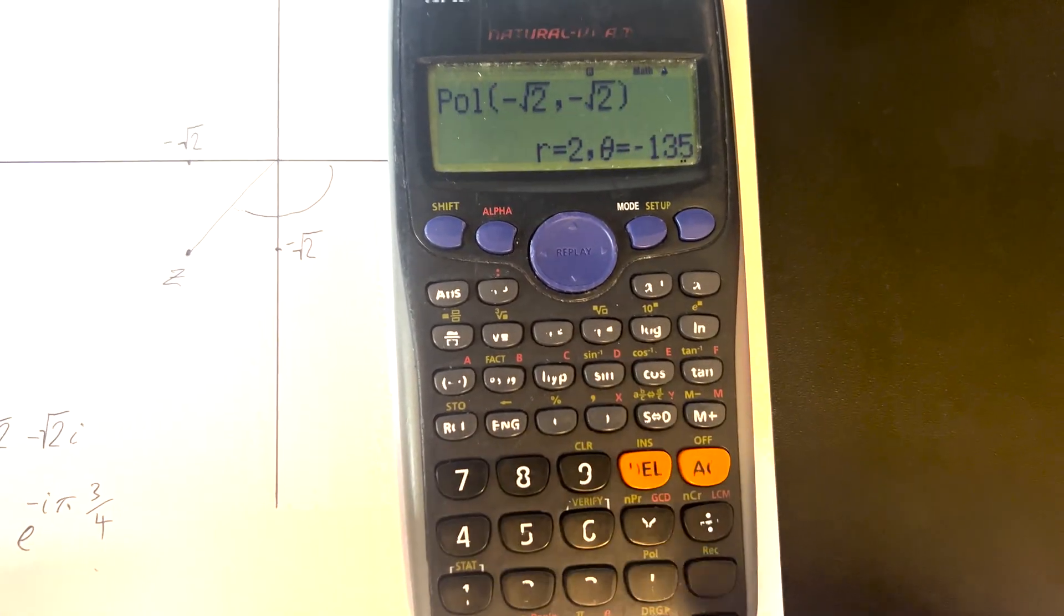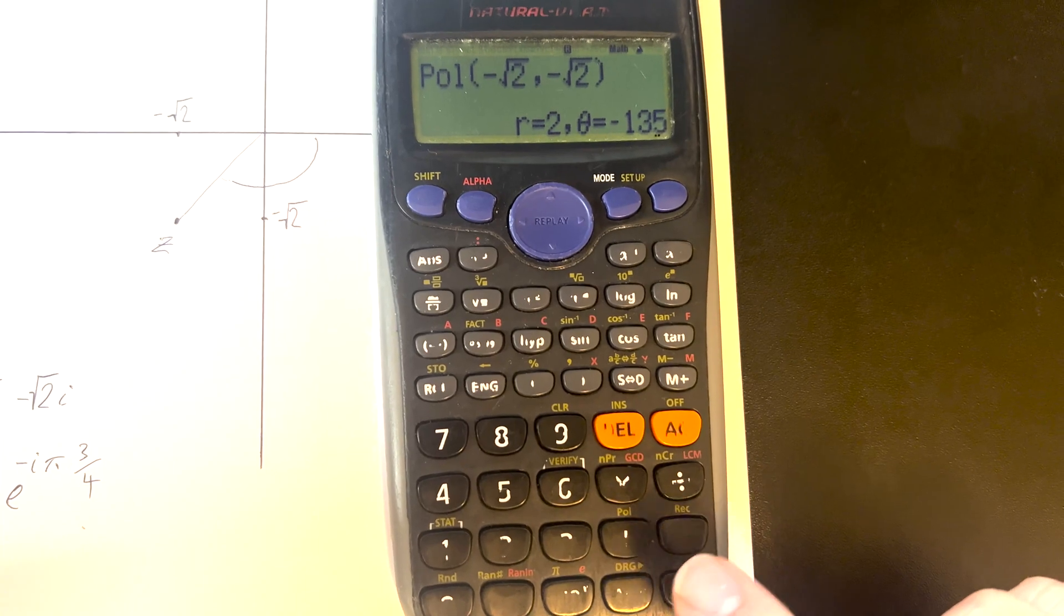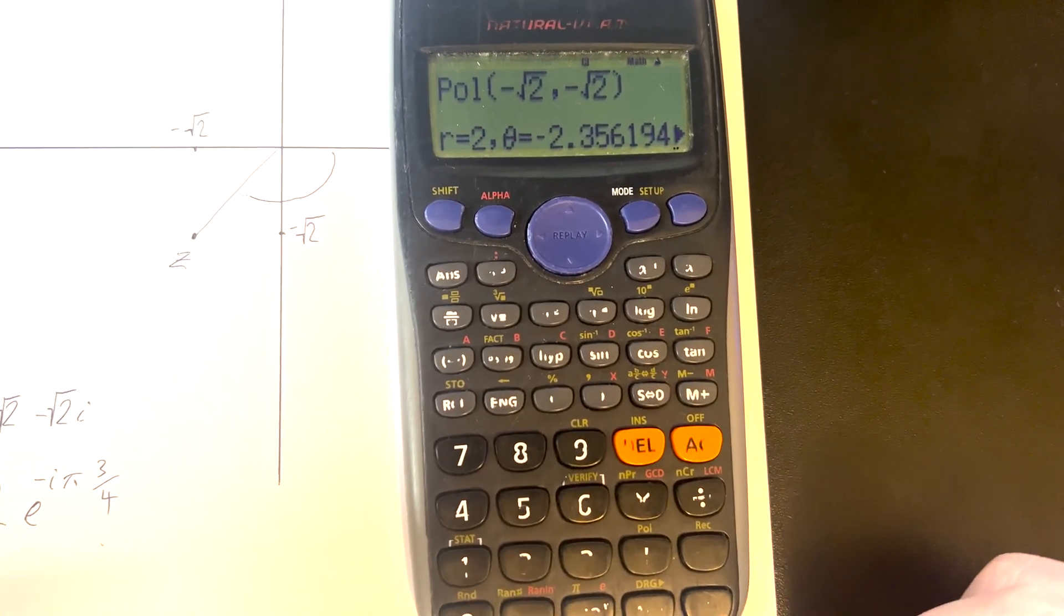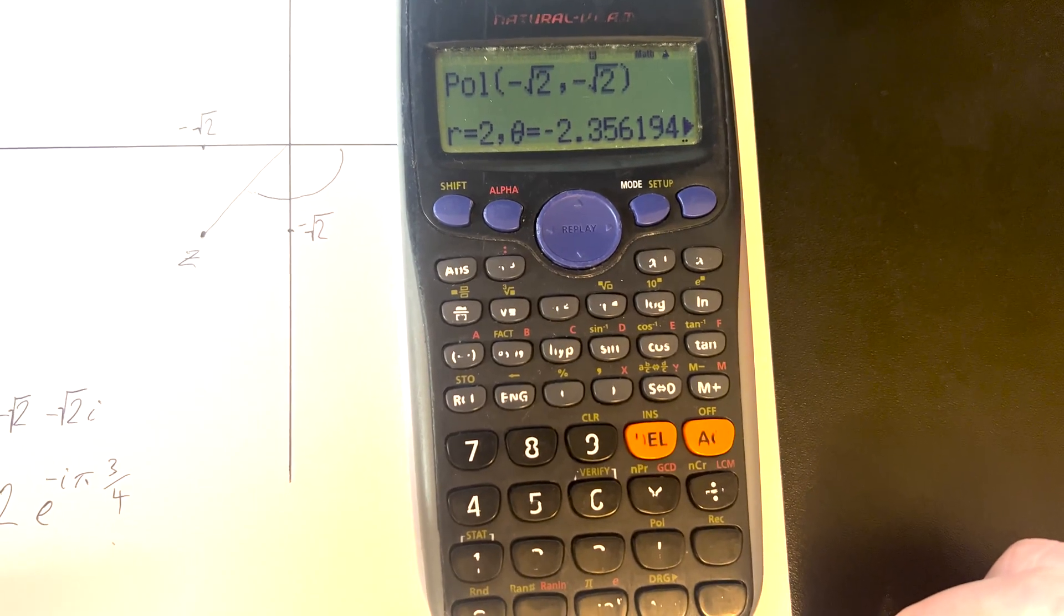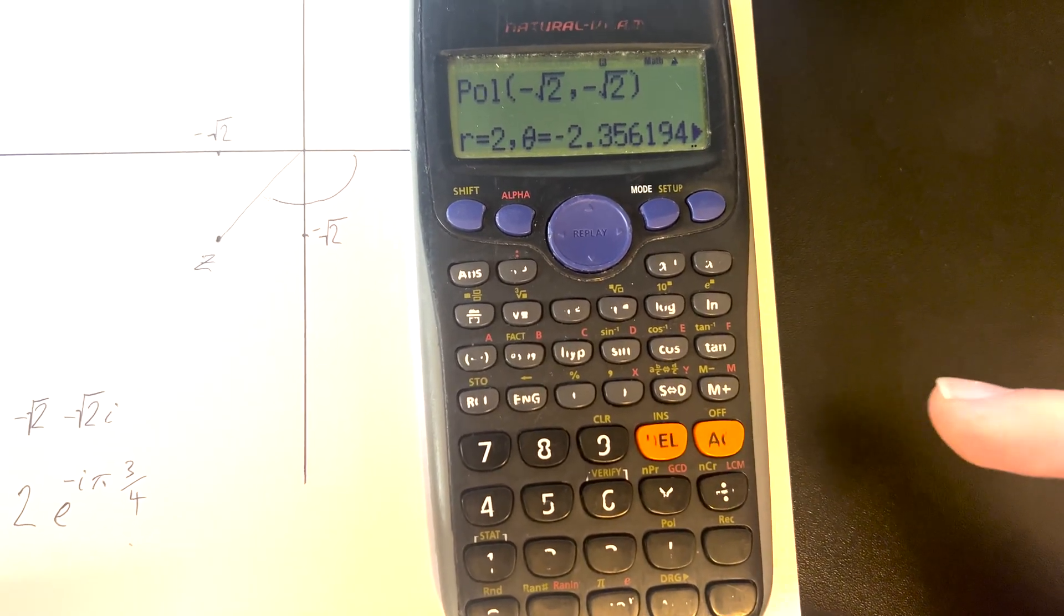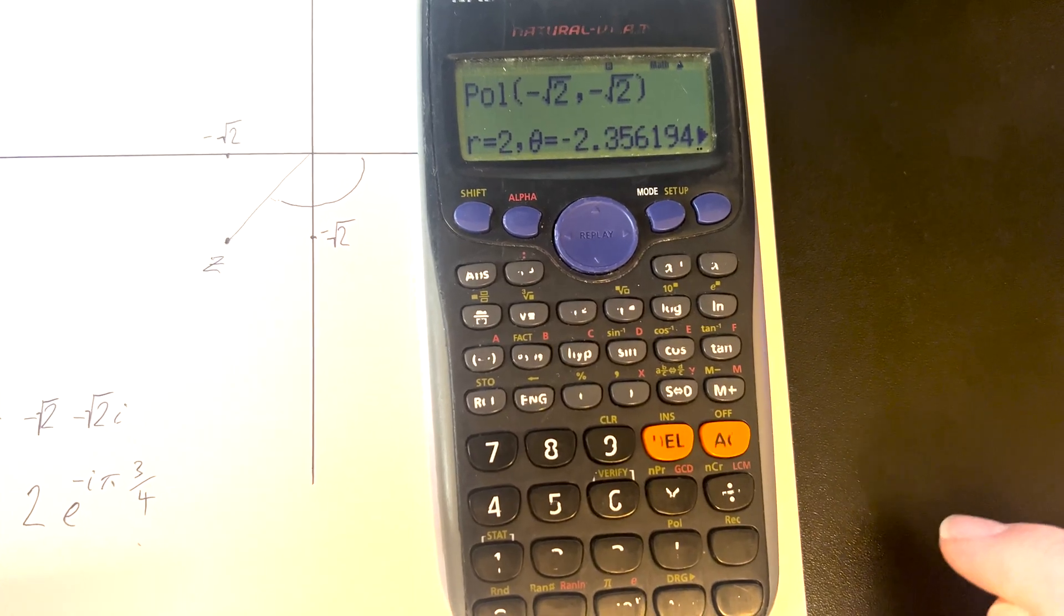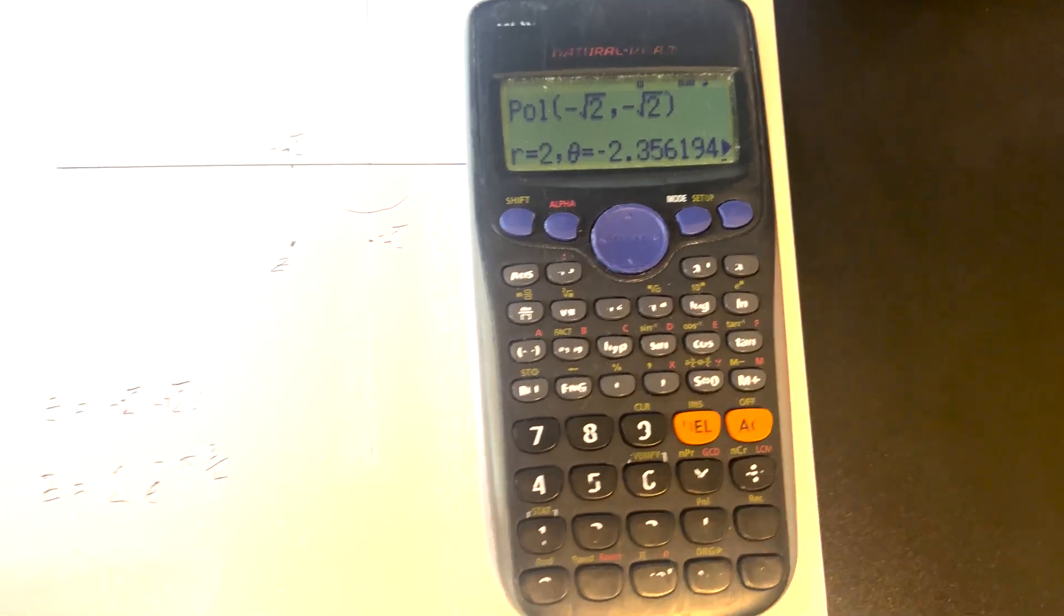If I want to change it to radians, all I do is select that, press equals, and there we go. Now our argument is in radians. One thing to note is that the domain for the argument is from minus 180 degrees to plus 180 degrees.